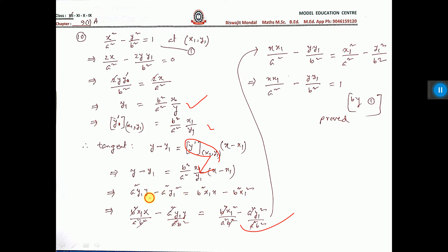After getting this, you multiply everything by a square b square. Then the equation is coming in this way. And right side you see, this is equal to 1.